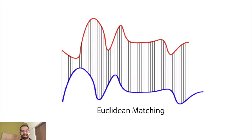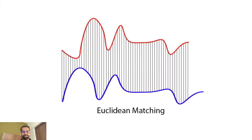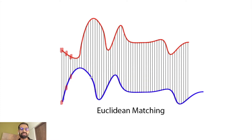There are different measures we can use to define similarity between two time series. One of the approaches could be using Euclidean matching. In case of Euclidean matching, we calculate the Euclidean distance point by point between two time series. For each corresponding point we calculate the Euclidean distance, and we sum it over the whole time series. That gives us the distance between two time series, which we can use as a measure of similarity.